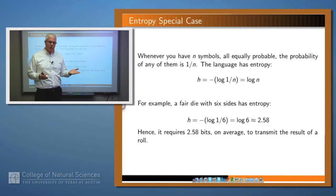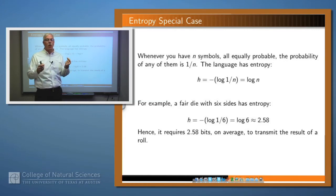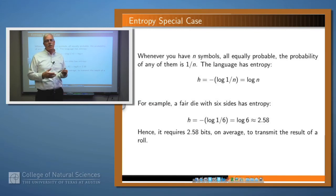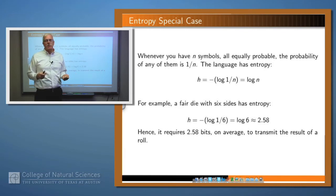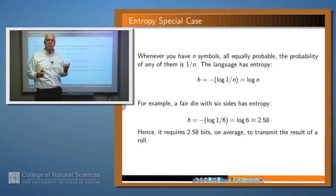A special case of entropy is that if you plug in the formula, you'll see that the entropy of a language with n symbols where all of them are equally likely is just log base 2 of n. So for example, in our language where we were rolling a die that had six sides, the entropy of that language is just log base 2 of 6, which is around 2.58. What that means is that on average, to transmit that language requires 2.58 bits in the best possible encoding.